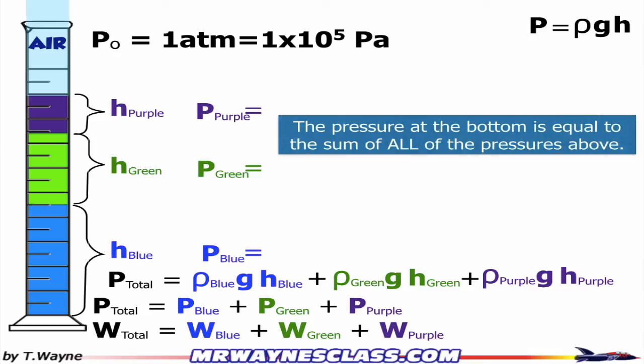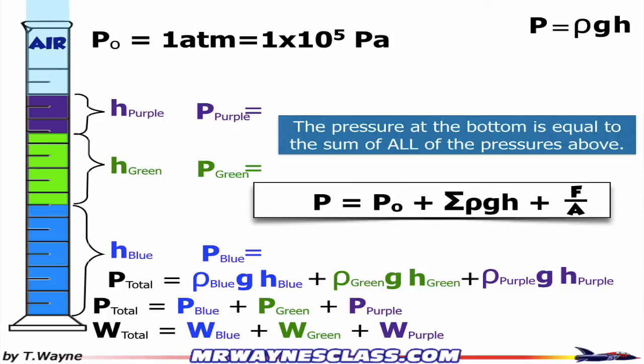The key thing to remember here is the pressure at the bottom is equal to the sum of all the pressures above. All the pressures above. So that gives us this formula. The pressure is equal to the pressure P naught, which is the atmosphere above the water, and the sum of all the pressures, which I wrote as sigma rho gh.